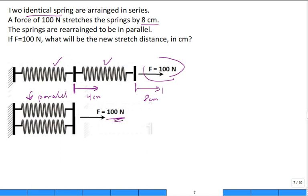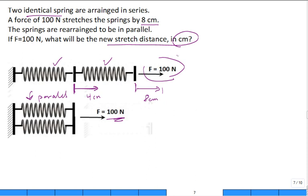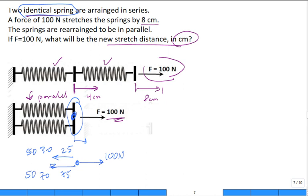The springs are rearranged to now be in parallel. If 100 newtons is applied, what will be the new stretch distance in centimeters? If I do a free-body diagram right here, I have a 100-newton load going to the right, and I have a load going back in this spring, a load going back in that spring. They are identical springs, and they're going to be stretched the same distance. So guess what it has to be? 50 and 50. Is this a guess, or is it with confidence? It's going to pick up a load of 50 newtons each.